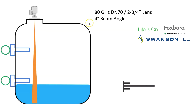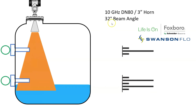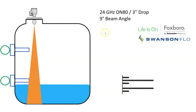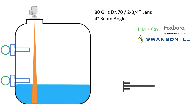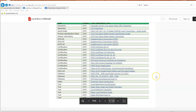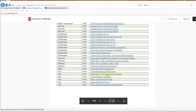At 80 gigahertz, the beam doesn't even see the thermal well, so you don't have to worry about blanking them out or telling the radar to ignore echoes at those levels. We've simply eliminated the problem — no false levels from obstacles because the beam is nice and narrow. Comparing the three: 32 degrees, nine degrees, and four degrees. You can actually use a calculator to figure out how big that beam is going to be. Search the web for a radar beam angle and width calculator.